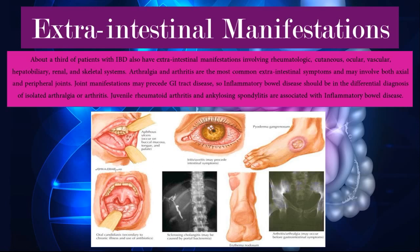Examples of extra-intestinal manifestations shown in the picture below include pyoderma gangrenosum, erythema nodosum — which are red nodules that develop on the skin — iritis or uveitis, which is inflammation of the iris or uveal layer of the eye, aphthous ulcers occurring in the buccal mucosa of the tongue and palate, oral candidiasis, sclerosing cholangitis, and arthritis or arthralgia meaning joint inflammation.